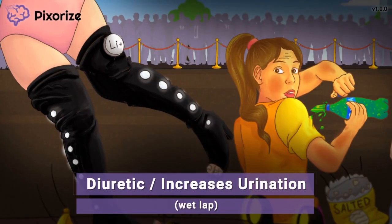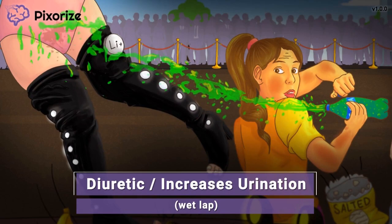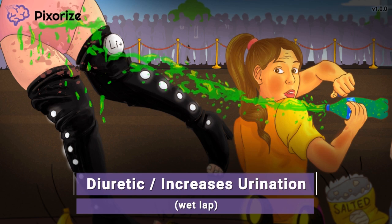As one of the spectators cracks open a soda, the soda sprays everywhere including our model's lap. This soda must have been shaken up quite a bit earlier to have sprayed out like this. Notice how the soda is spraying directly onto the model's lap, making it look like she peed her pants.